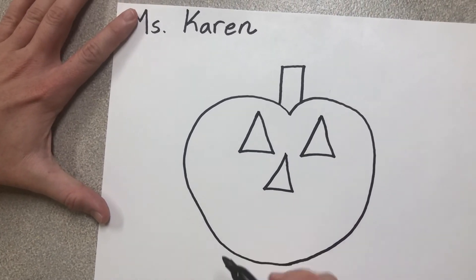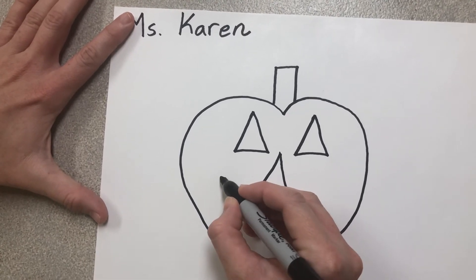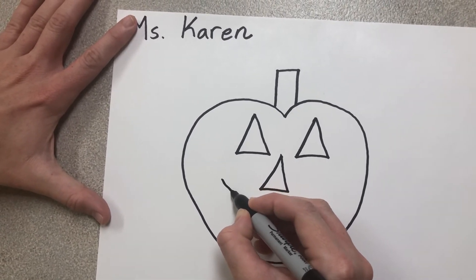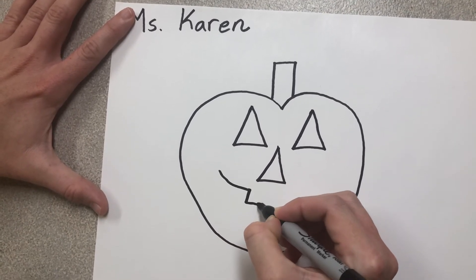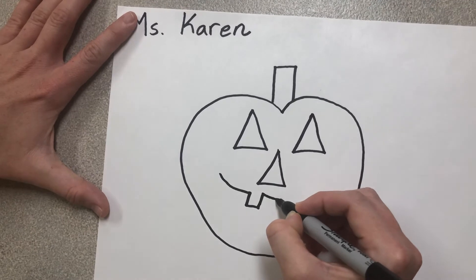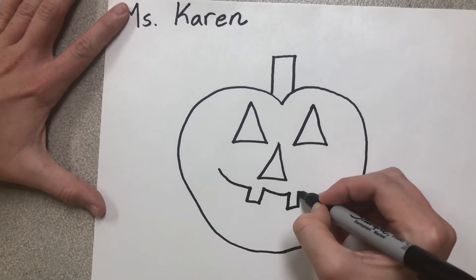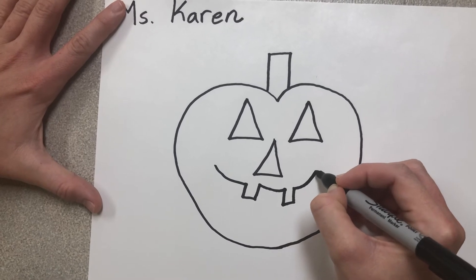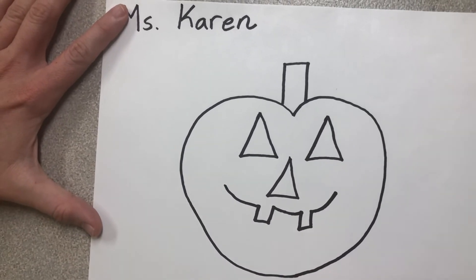Now he needs a mouth. So we are going to make a curved line like a smile, only we're going to stop and then we're going to draw a tooth. And then we're going to continue with our smile and stop and draw a tooth. And then keep going with our smile again, ta-da!